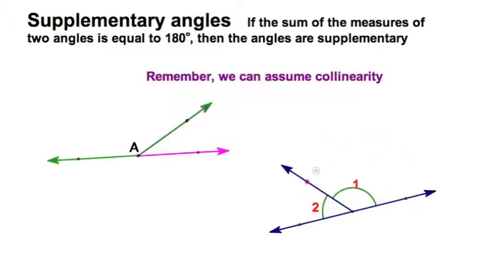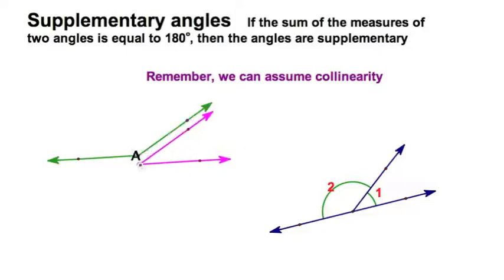So in this diagram down here, angles one and two—I know these two angles are supplementary because I know that these two are opposite rays, another way of saying that a line, because I can assume collinearity. Same thing with this diagram with the two colored angles.